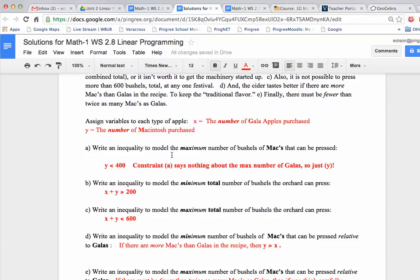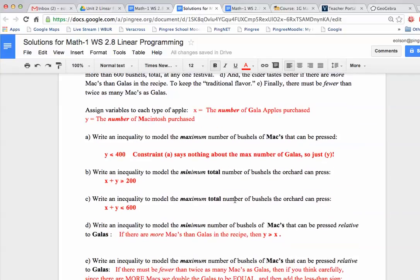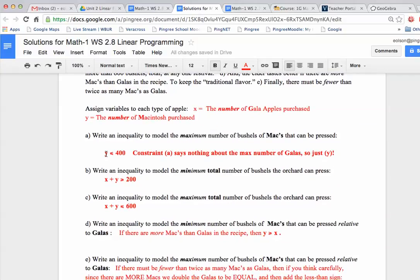It says write an inequality to model the maximum number of bushels of Macintosh apples. So up here it says in the first part that the orchard has only a total of 400 bushels of Macs on hand. So that just means you've got to keep your Ys, that's the Macs. The Ys have to be less than 400. It's confusing to some because there's no X involved, but it says nothing about the number of Galas. So it's just Y.